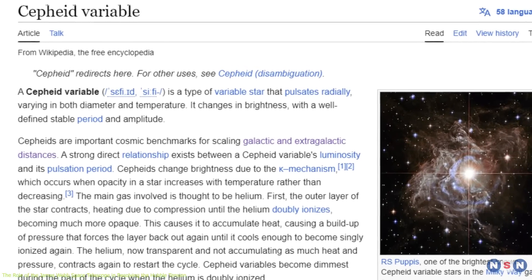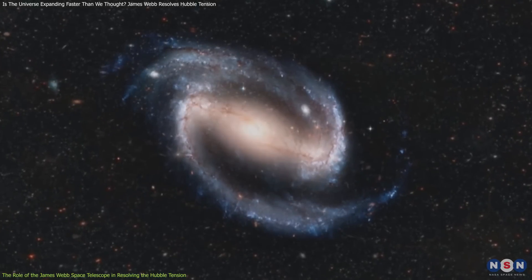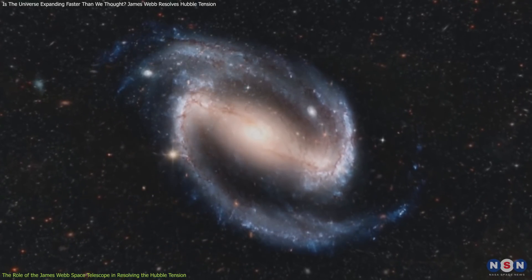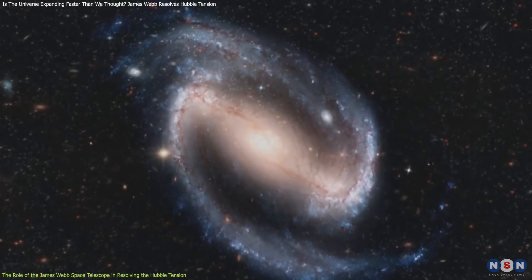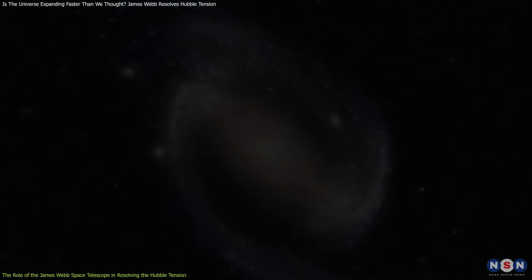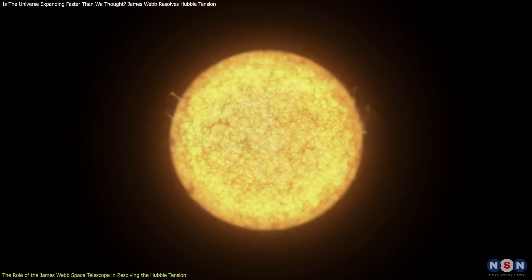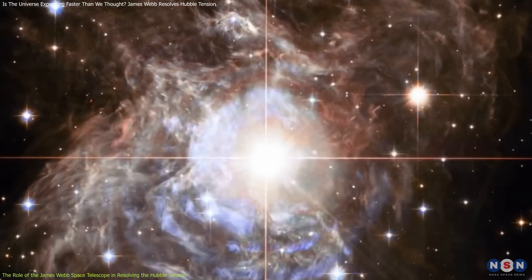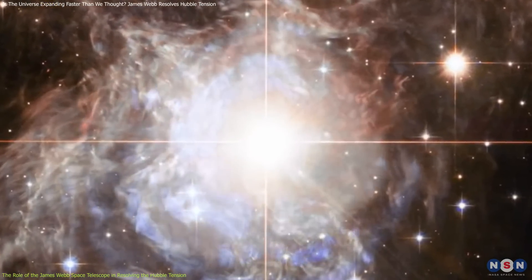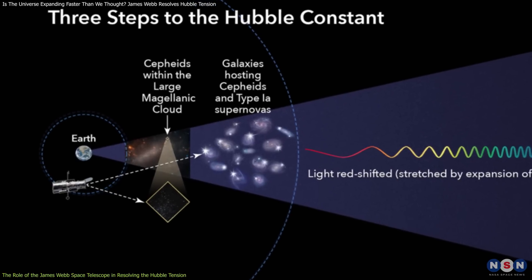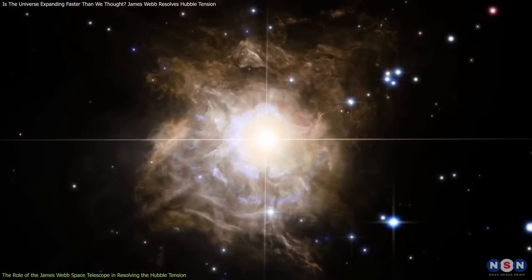The first method they employed involved cepheid variable stars. Cepheids are a type of star that pulsates at regular intervals, with a direct relationship between their pulsation period and intrinsic brightness. So the strategy is measuring the apparent brightness of these stars and comparing it to their intrinsic brightness so that astronomers can determine their distance from Earth. This, in turn, allows for the calculation of the Hubble constant based on how fast these galaxies are receding from us.